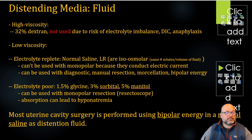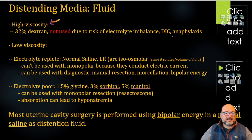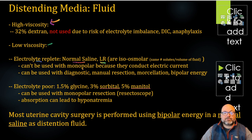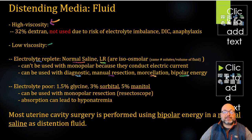As far as distending media, we have several things to pick from. High-viscosity fluids like dextran are really not used any longer — there's a risk of electrolyte imbalance, DIC, and anaphylaxis. What we typically use are low-viscosity fluids, either that have electrolytes in them — normal saline or lactated Ringer's — or electrolyte-poor solutions, the most common being glycine. These electrolyte-containing fluids cannot be used with monopolar instruments because the fluid itself conducts electricity. You can use normal saline or LR with a quick diagnostic hysteroscopy, for manual resection or polypectomy, if you're using a power morcellator, or if you've got bipolar energy but not monopolar. Electrolyte-poor solutions like glycine can be used with monopolar resection.